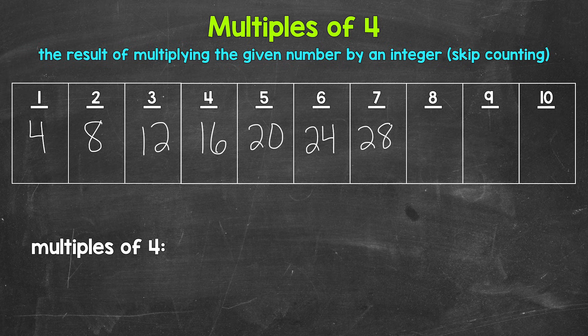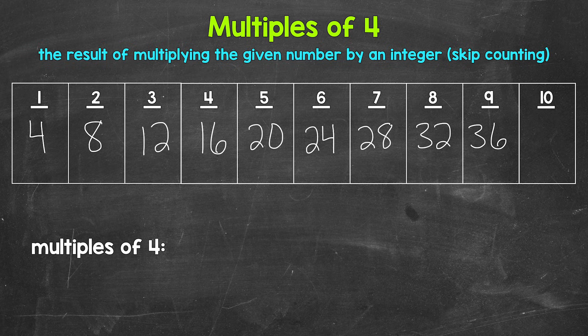Six times four is 24. Seven times four is 28. Eight times four is 32. Nine times four is 36. And 10 times four is 40.